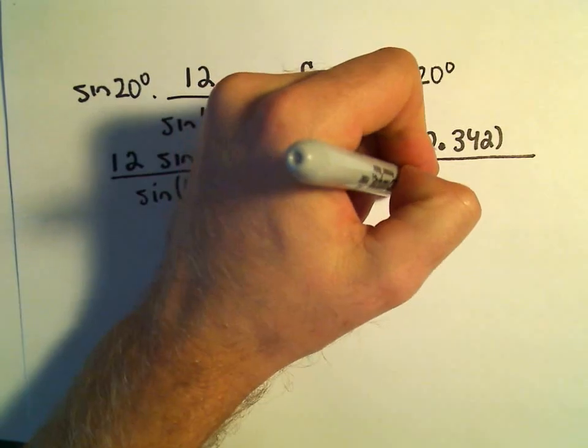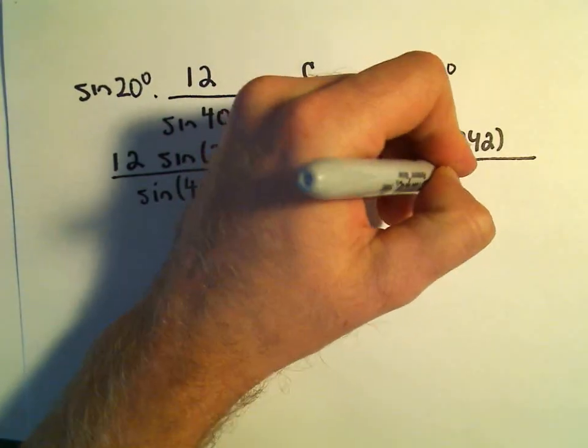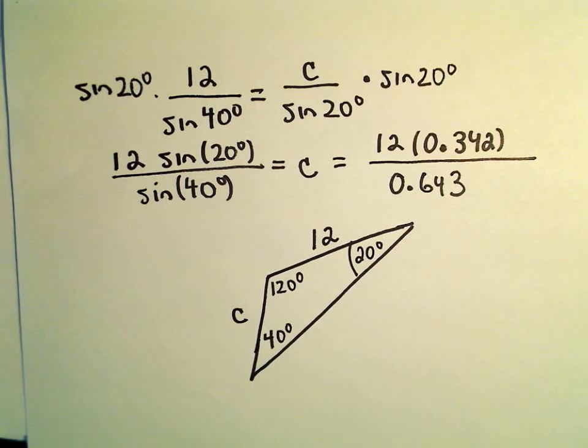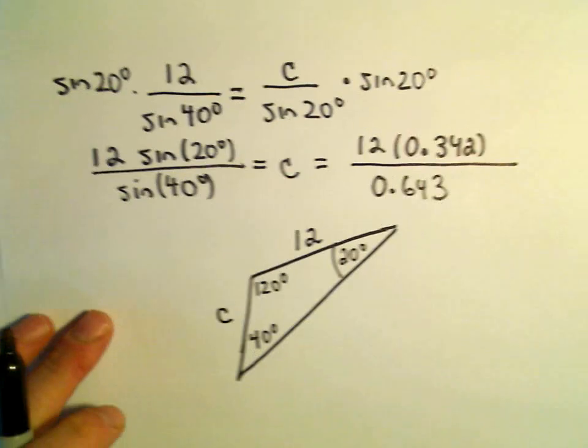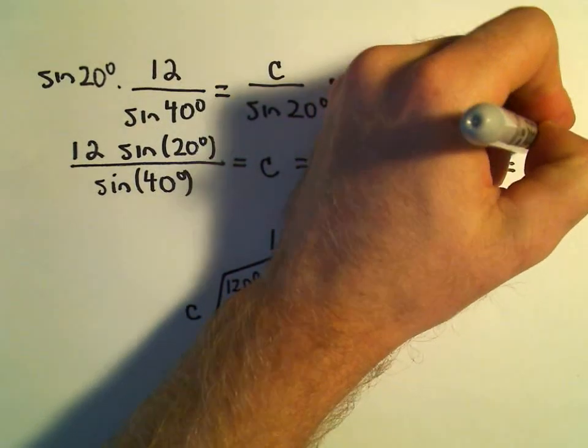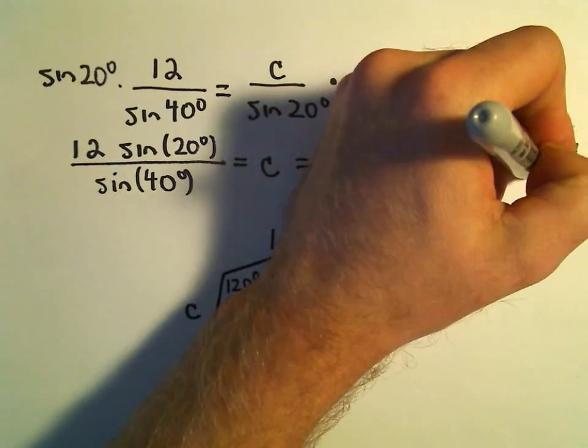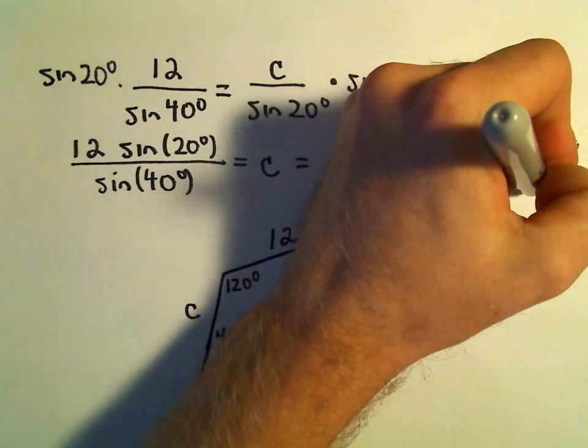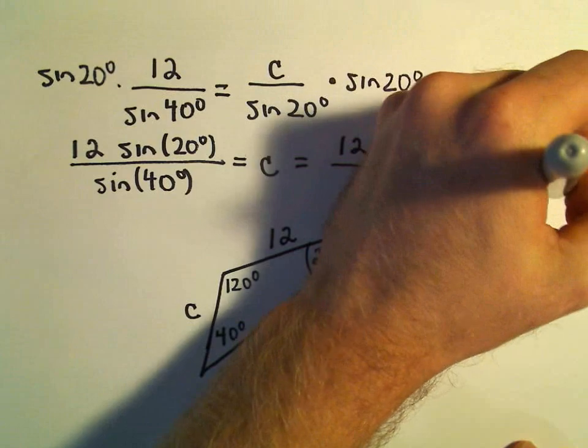If we do sine of 40 degrees, I'm getting 0.643 after rounding. So if we take 0.342 and multiply that by 12, I'm getting 4.104 over our 0.643.